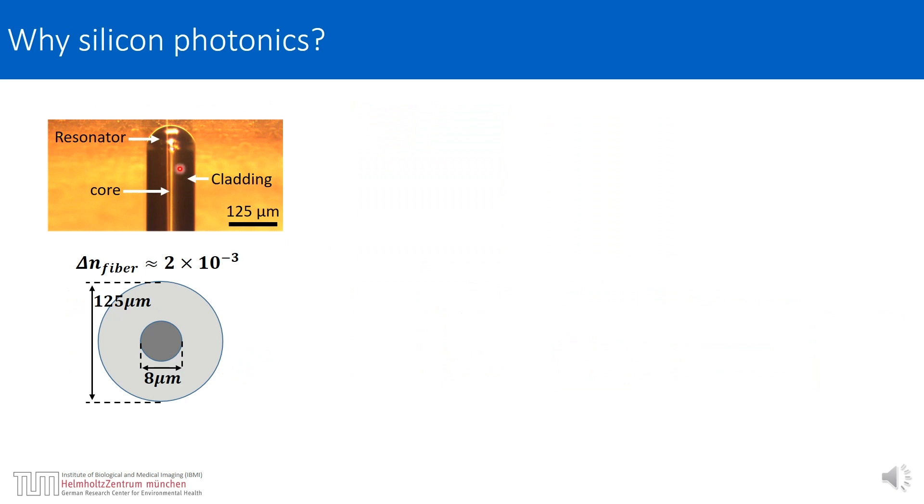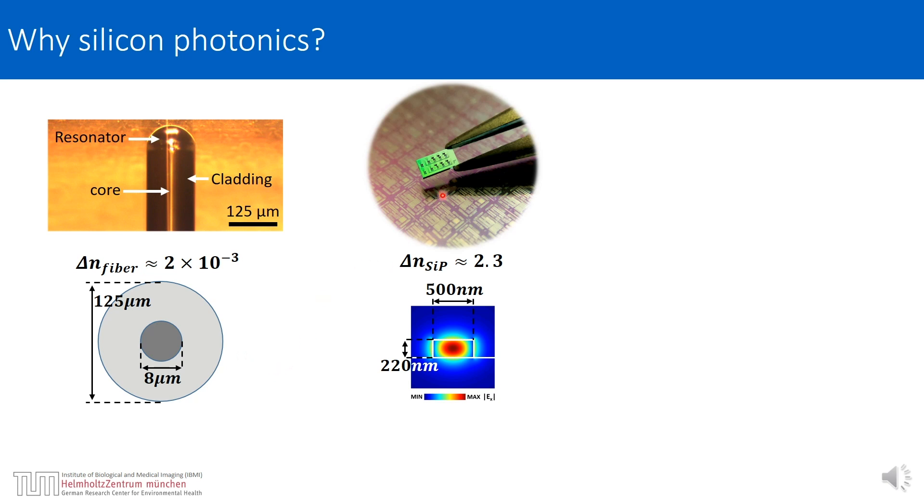As an example, let's look at this plano-concave resonator that is realized in a single mode silica fiber. What limits its miniaturization is the low refractive index contrast between the core of the fiber and the cladding. On the other hand, in silicon photonics rectangular waveguides with submicron cross sections were already demonstrated for many years, and the reason for this drastic miniaturization is the strong refractive index contrast between the silicon core and the silica cladding.